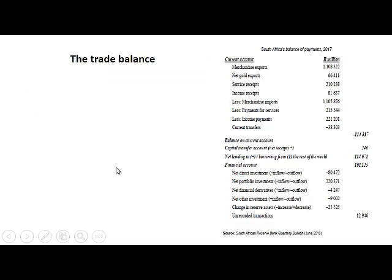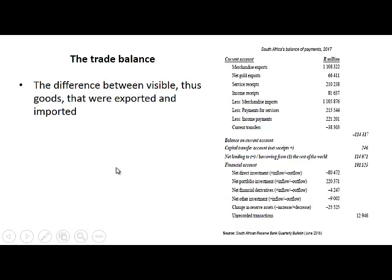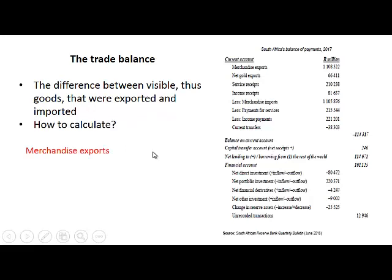The first calculation we are going to look at is the trade balance. The trade balance is the difference between visible exports and imports — that means goods that were exported and imported. To calculate it, we take merchandise exports, in other words visible exports, which is 1,108,322 million rand.